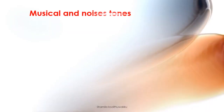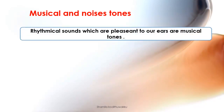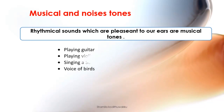Rhythmical sounds which are pleasant to our ear are called musical tones. Examples include playing guitar, playing violin, singing a song, and the voice of a bird. Such sounds are produced by formal vibrations of objects.